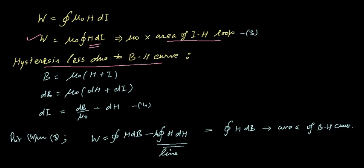Now we will define this BH curve: B is equal to μ₀H plus I. dB is equal to μ₀dH plus dI—differences in part of it. From this, dI is equal to dB/μ₀ minus dH. That is the equation.